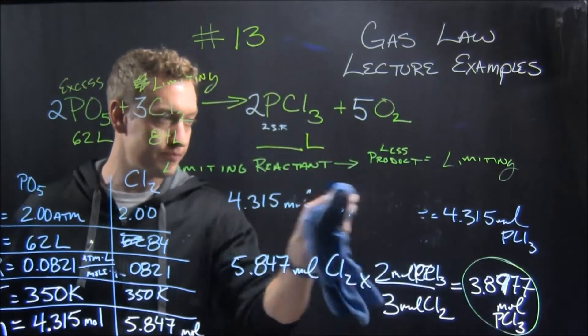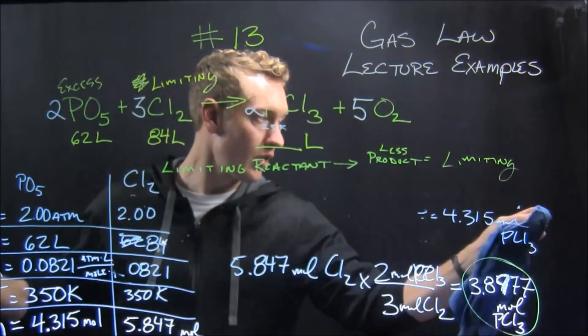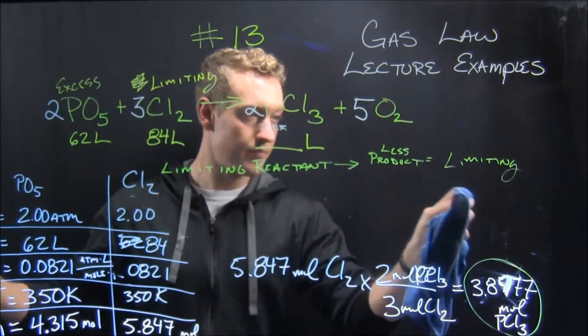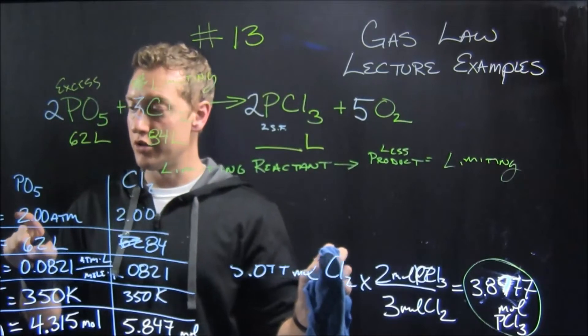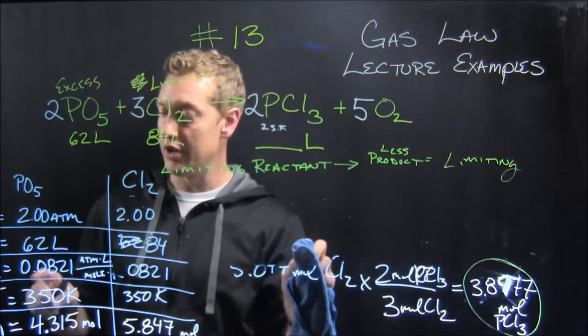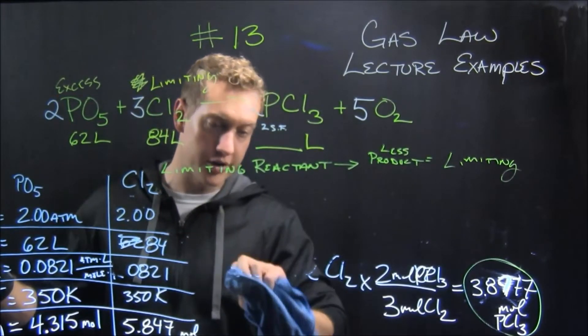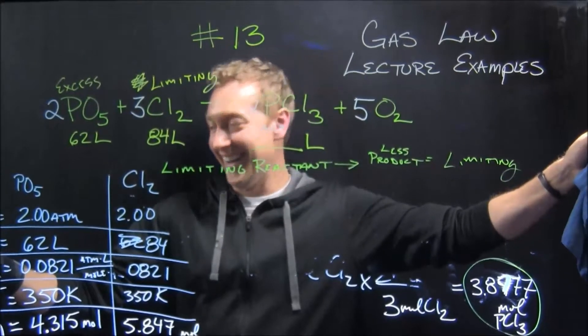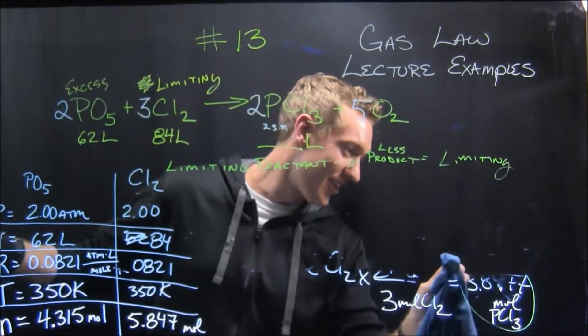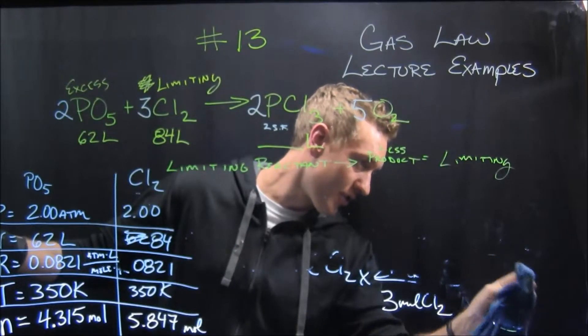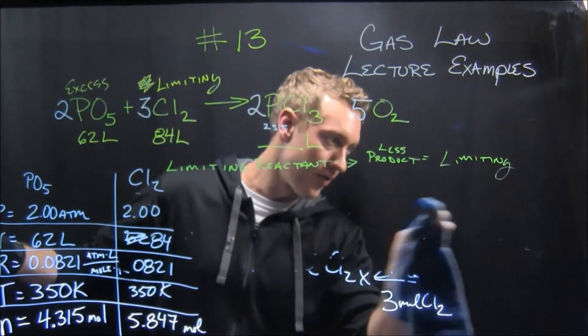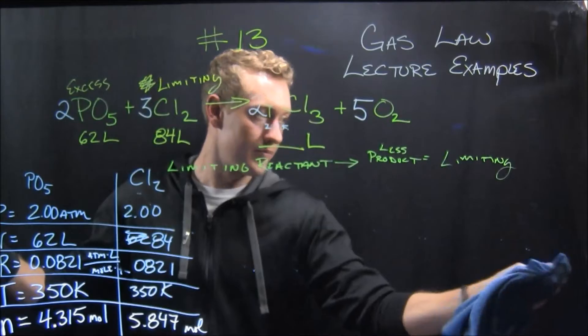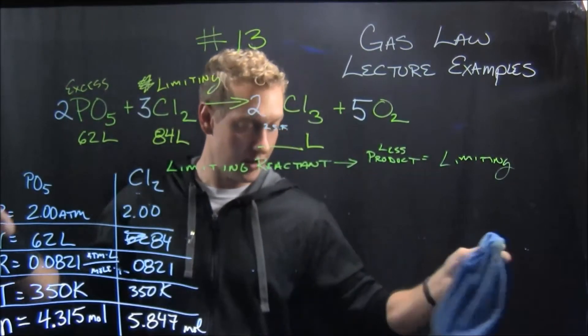This time we're solving for volume, but the conditions are the same. So it's still 2 atmospheres, it's still 350 Kelvin, and R is still constant, because, you know, it's a constant, so it's always that. Oh. All right. Okay.